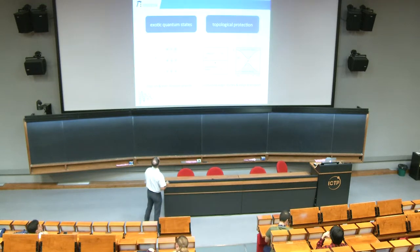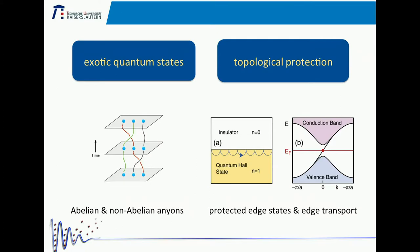Topological states of matter are of course very interesting, for basically two reasons. The first reason is that topological systems can have very exciting exotic quantum states like anyonic excitations on top of a fractional quantum Hall system, which can be used also in connection with quantum information. Likewise, since topological systems are characterized by integer quantum numbers, whenever you have a spatial border between two systems having different quantum numbers, something has to happen.